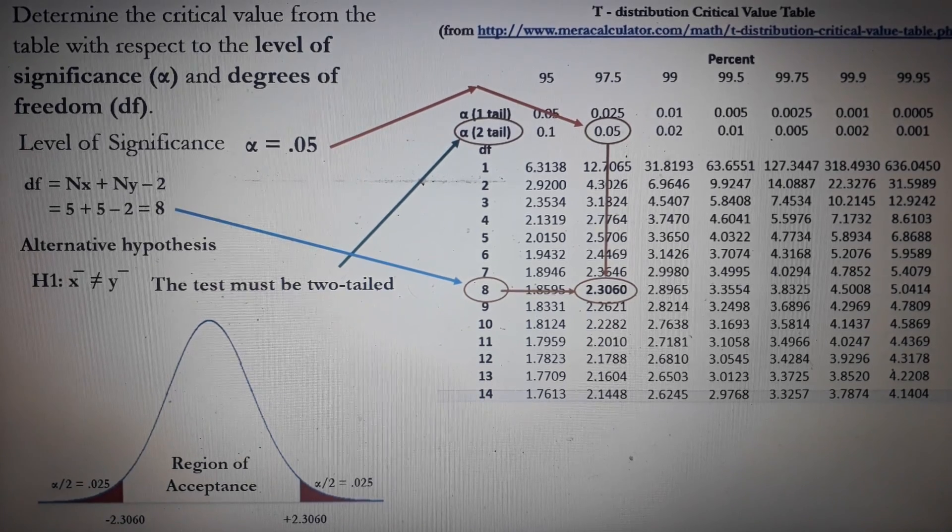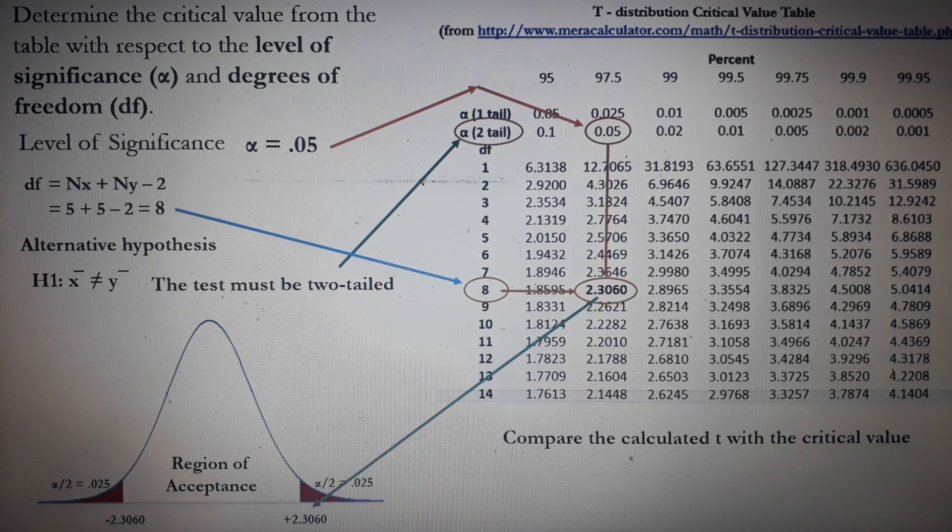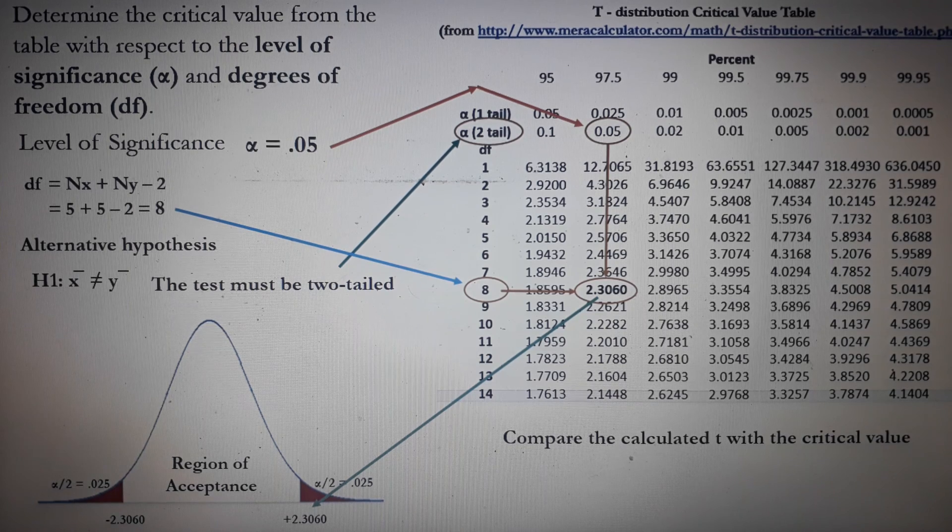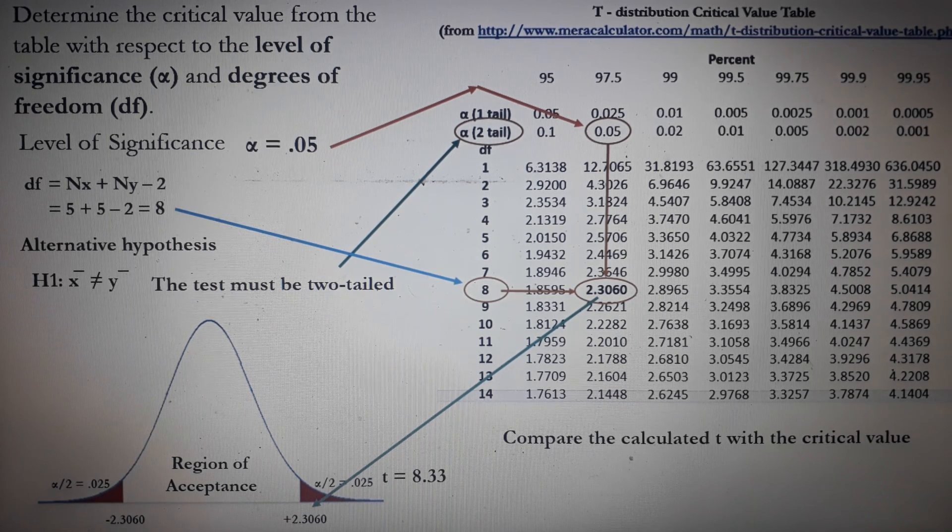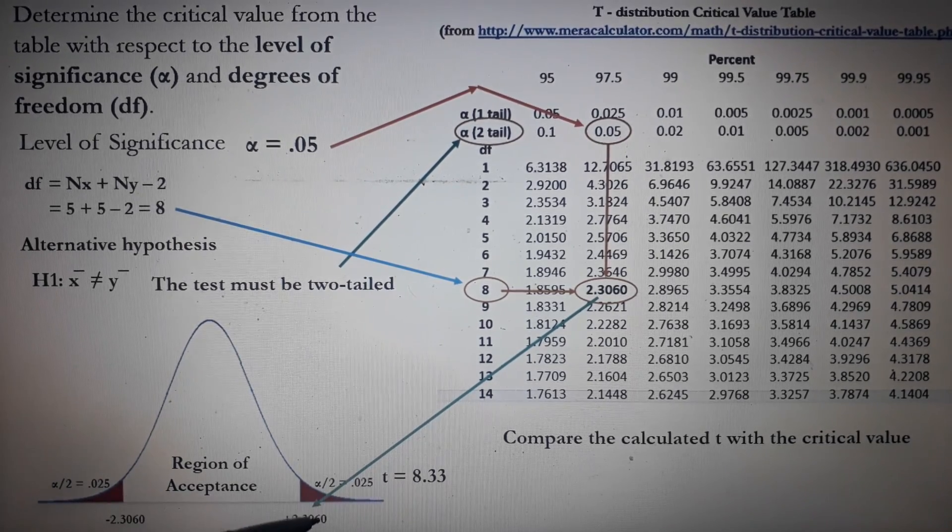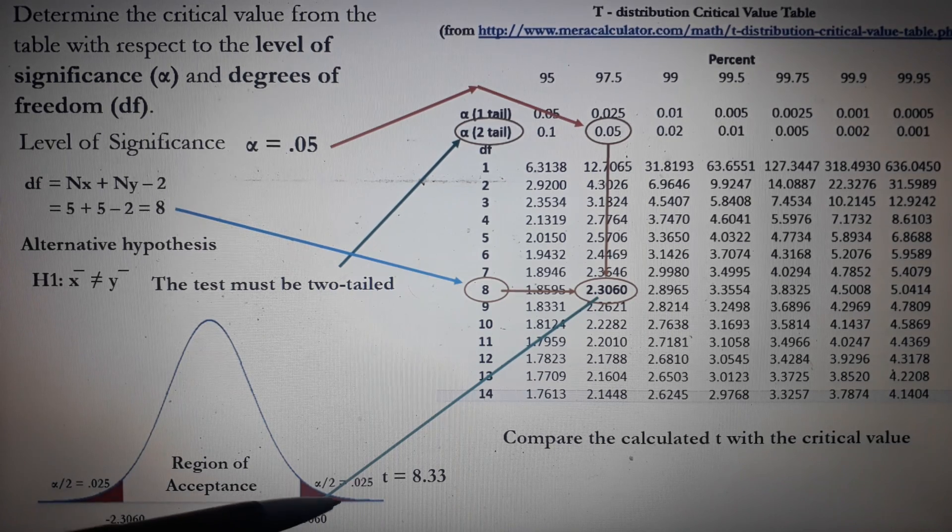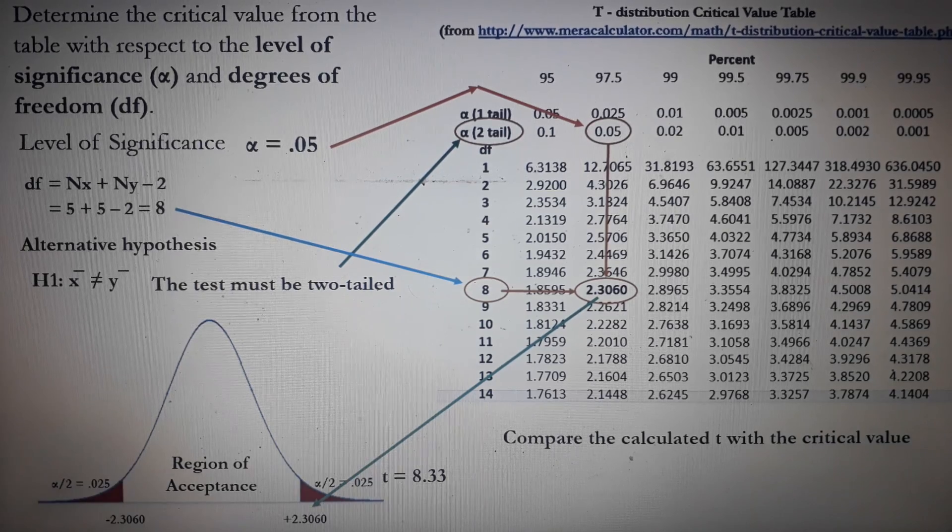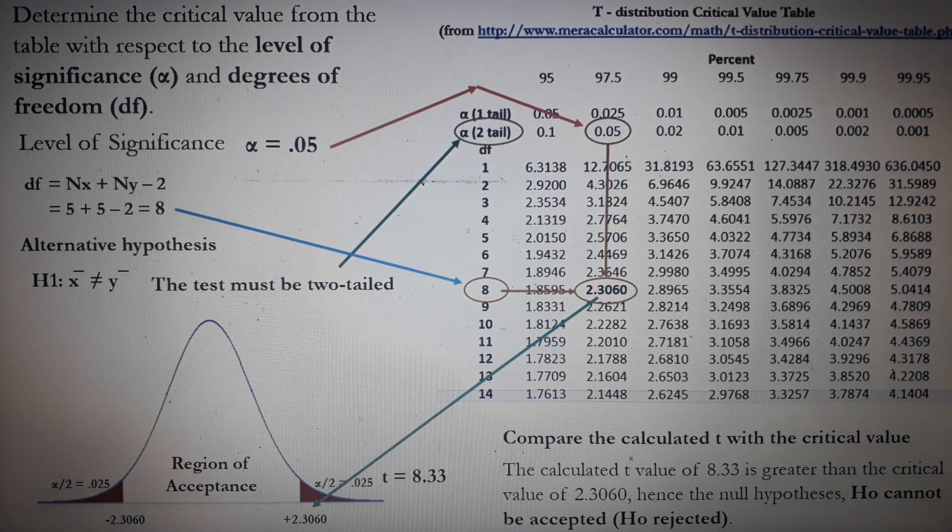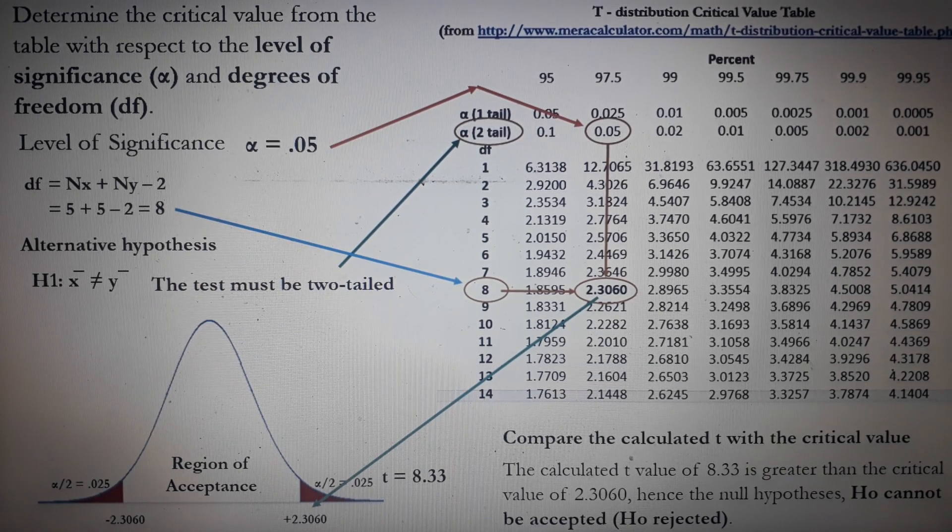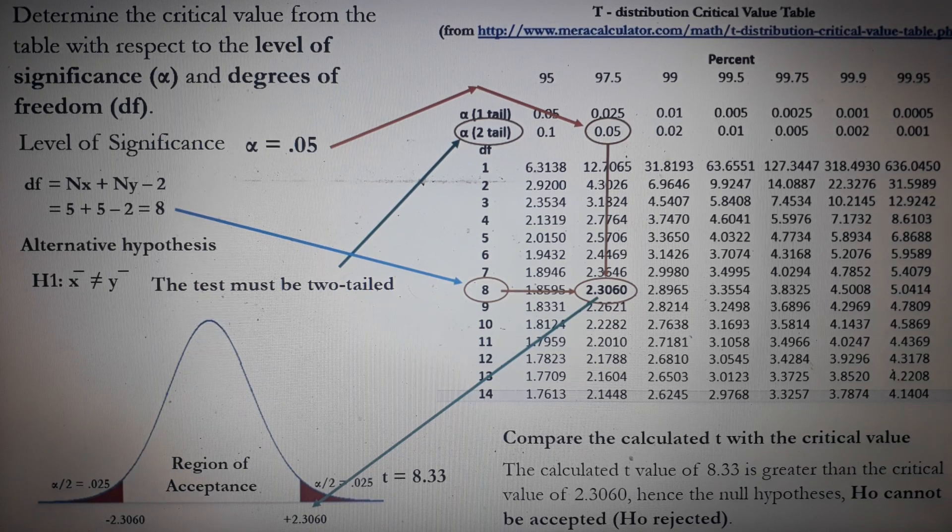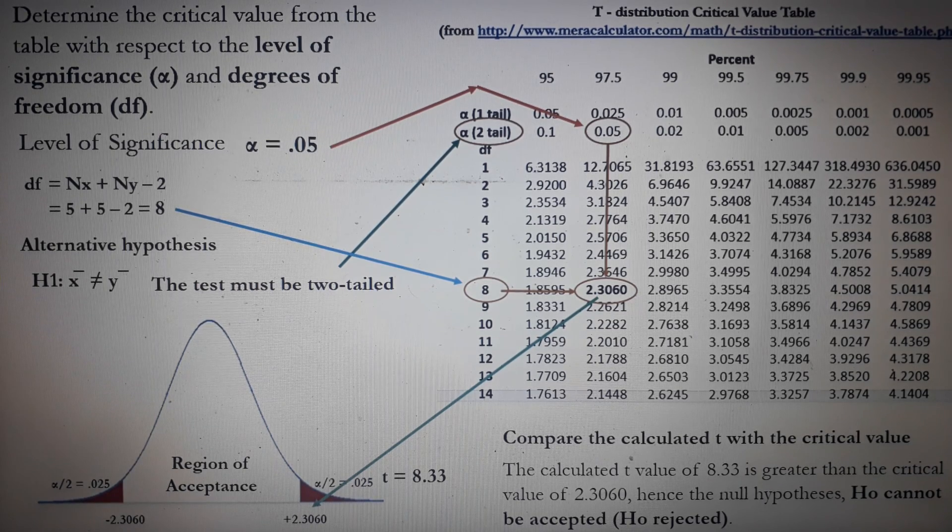Next, we have to compare the calculated T with the critical value. Remember that the calculated T is 8.33, which is located beyond the region of acceptance or it is located at the region of rejection. Therefore, we can say that the calculated T value of 8.33 is greater than the critical value of 2.3060. Hence, the null hypothesis HO cannot be accepted. In other words, HO is rejected.